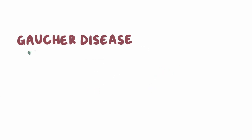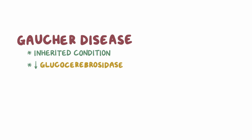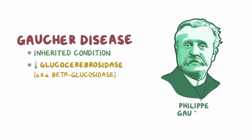Gaucher disease is an inherited condition characterized by insufficient levels of the enzyme glucocerebrosidase, also called beta-glucosidase. It's named for the French physician Philippe Gaucher who first described the condition.